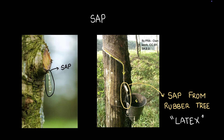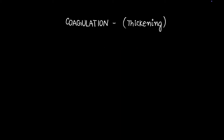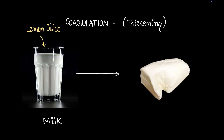Step one was collecting the sap, but the sap is a liquid. Step two is coagulation, or thickening of the sap. It's a simple concept — if you add a few drops of lemon juice to milk, the milk turns into paneer. That entire process is an example of coagulation.